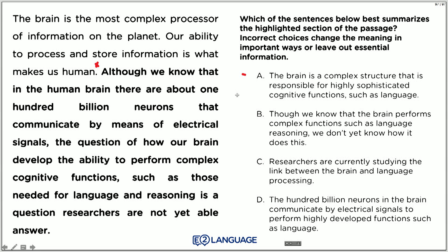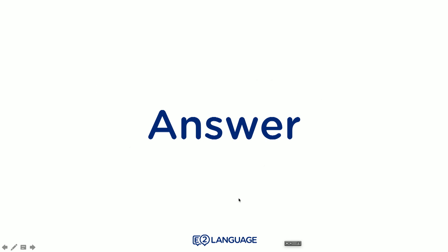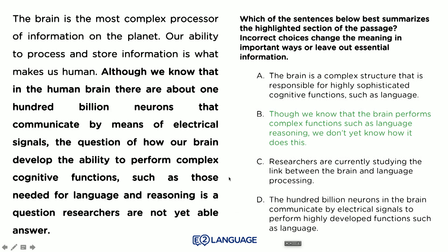Option A: 'The brain is a complex structure that is responsible for highly sophisticated cognitive functions such as language.' It's missing a big part of the meaning. Option B: 'Though we know that the brain performs complex functions such as language and reasoning, we don't yet know how it does this.' That works. Option C: 'Researchers are currently studying the link between the brain and language processing.' No. Option D: 'The 100 billion neurons in the brain communicate by electrical signals to perform highly developed functions such as language.' It's also missing something quite critical. The answer is B — this sentence says the same thing as the original, just in different words.